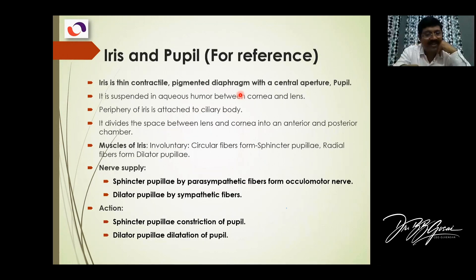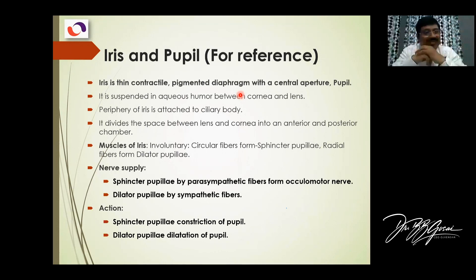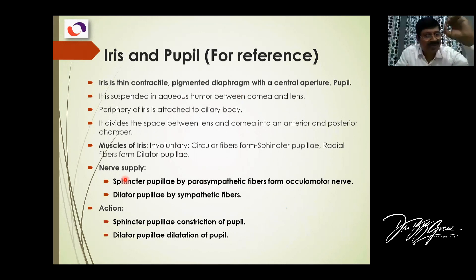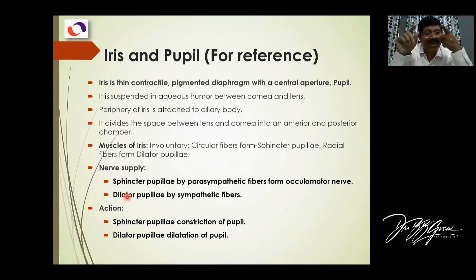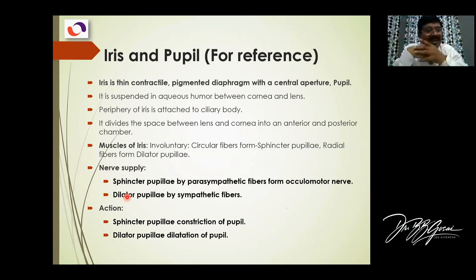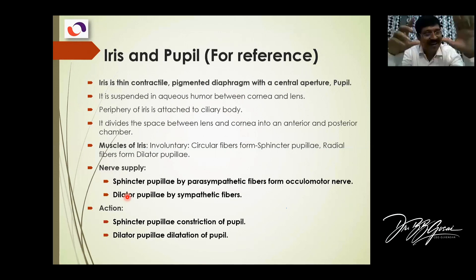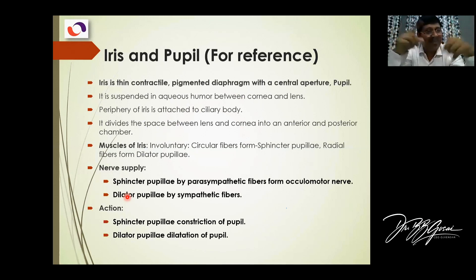An extra point is the nerve supply of the muscles in the pupil. The muscles present in the iris are two: one is the sphincter pupilli, which constricts the pupil, and there is a dilator pupilli, which dilates the pupil. When bright light comes or you are reading for near vision, the pupil constricts — this is by the sphincter pupilli, which receives fibers from the parasympathetic part of the oculomotor nerve. The dilator pupilli comes from sympathetic fibers.